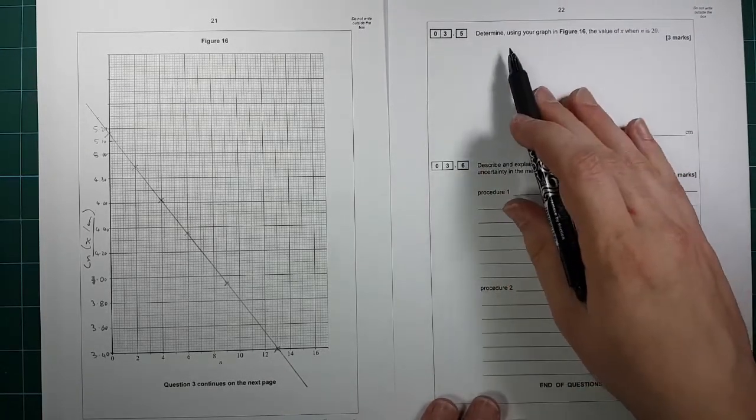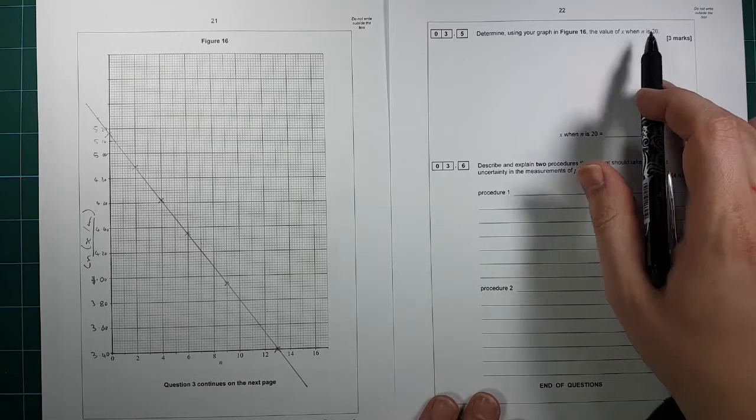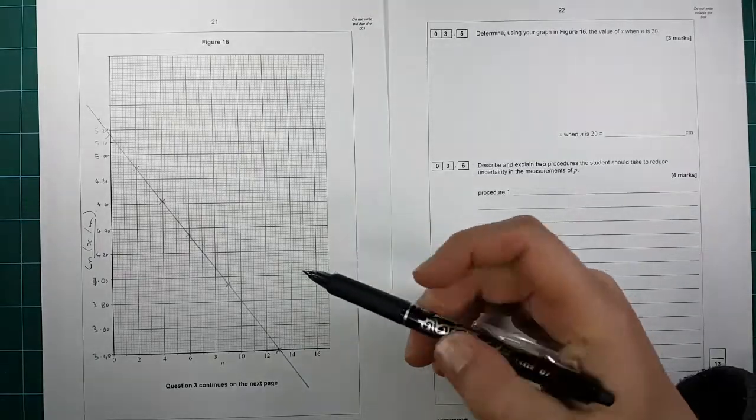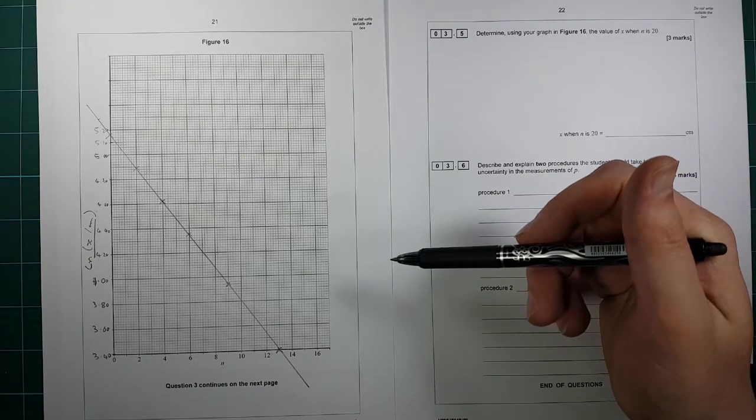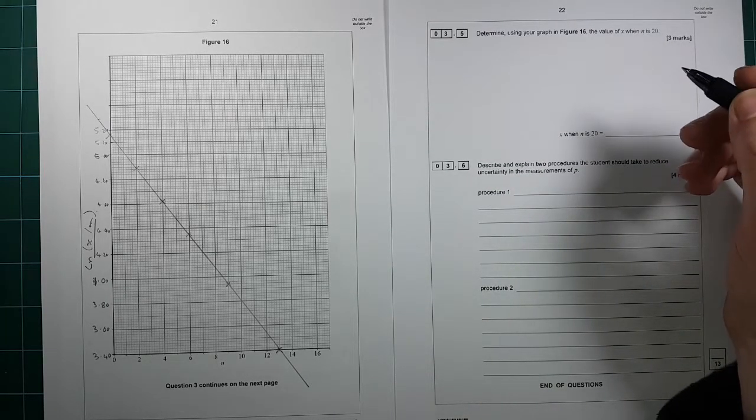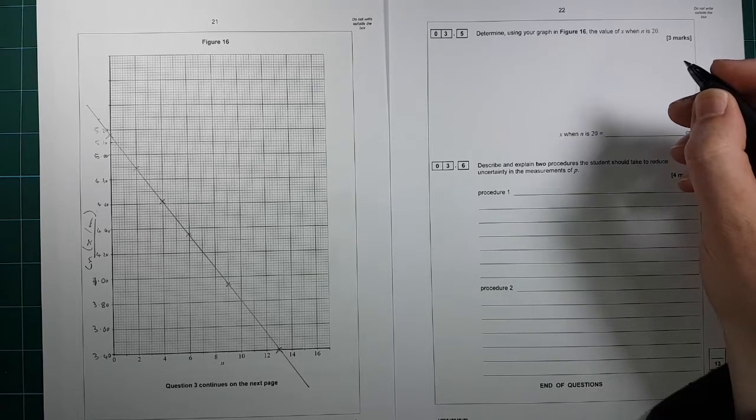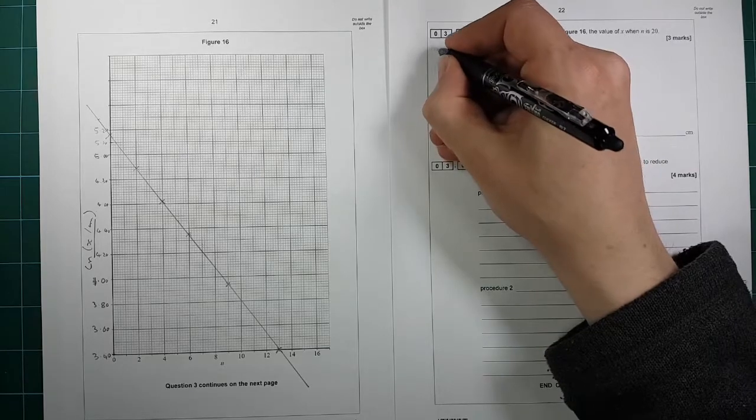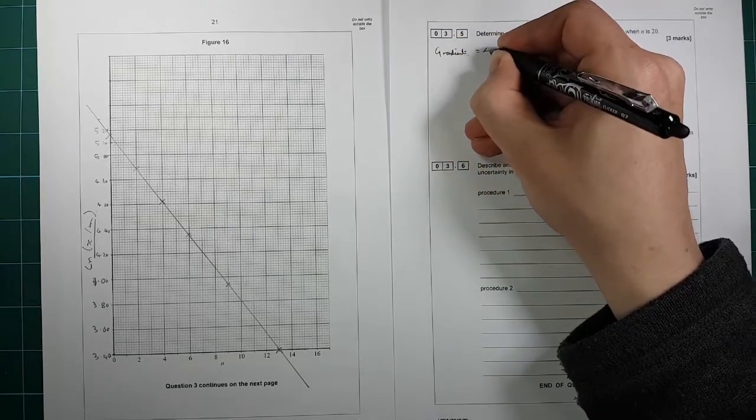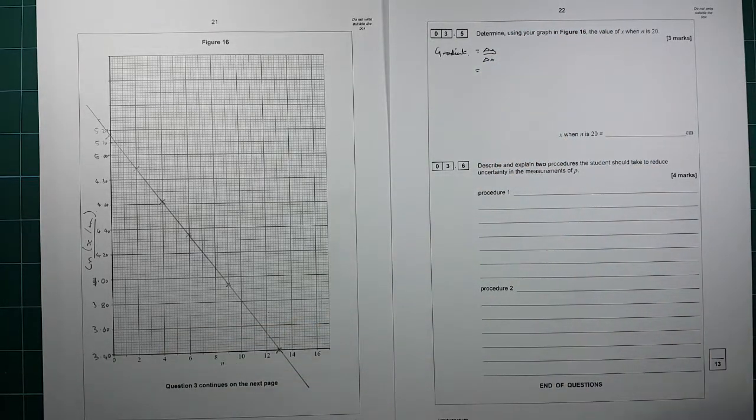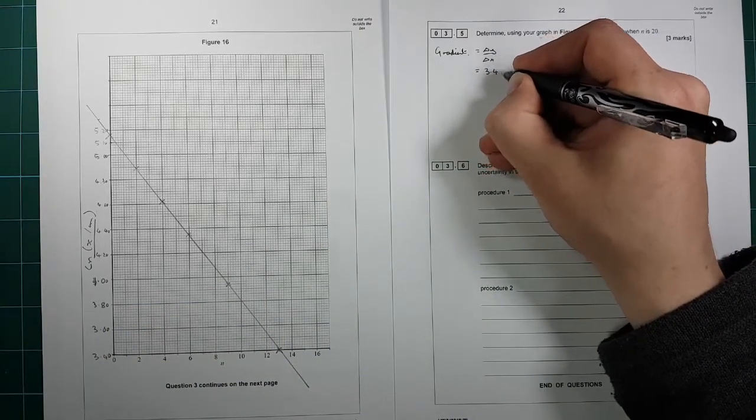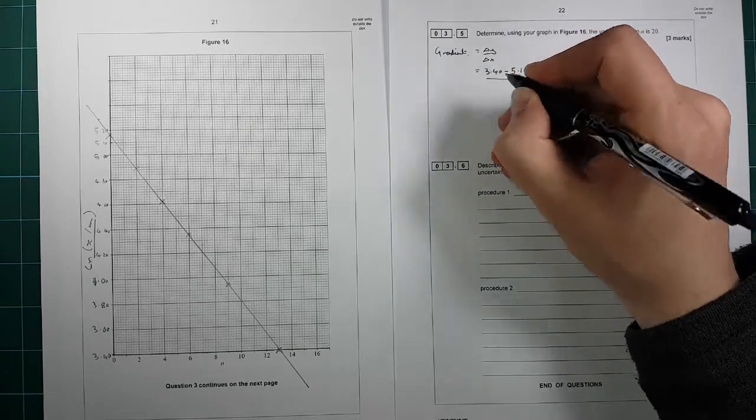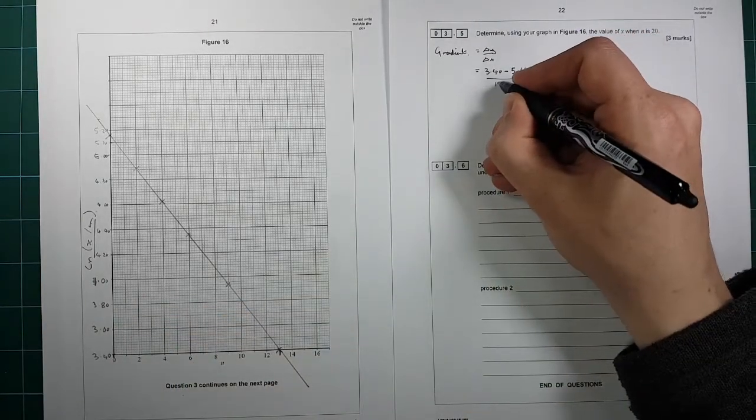Question 3.5. Determine, using your graph, the value for when n is equal to 20. So naturally they haven't allowed you here to keep going, that would be too nice of them. So what they've done is they've made it so you have to work this out mathematically. So in this question, for three marks there's absolutely loads that you need to do. But none of it's too bad. First of all we need to determine the gradient. We're going to need the gradient. It's equal to delta y over delta x. Delta y, we're going to read off this value here, is 3.40, take away this value here, which was 5.16, divided by this difference between there and there, that's 13 minus 0.